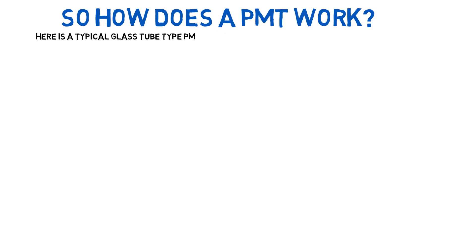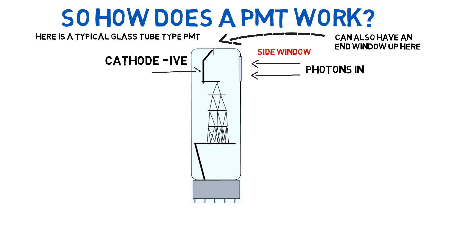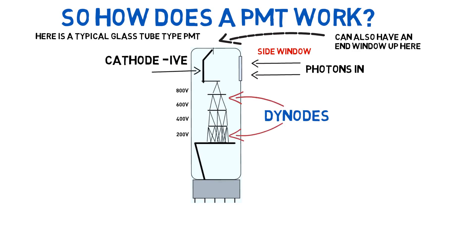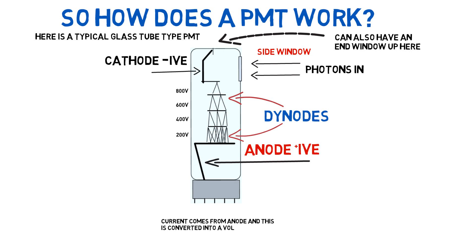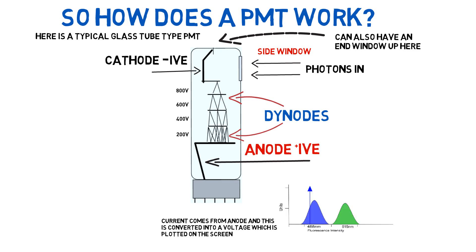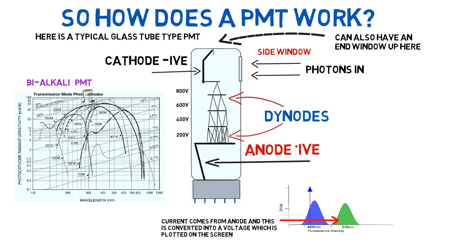Here's a typical glass-type PMT with a side window where the photons come in. They hit the cathode, and then you see the dinodes going down to the anode, which is positive. It is the dinodes where the high voltage is applied. The current from the anode is converted into a voltage, which is plotted as histograms. The frequency range differs for the bialkali and multialkali PMT, with multialkali being slightly higher. The spectral response depends upon the materials the cathode is made from.